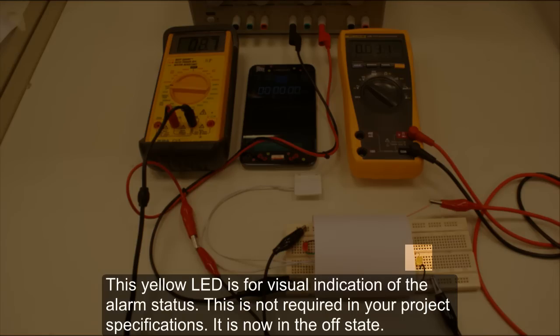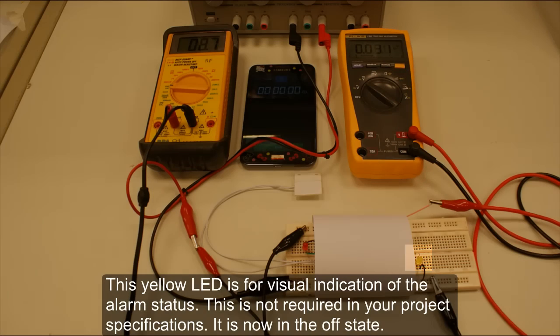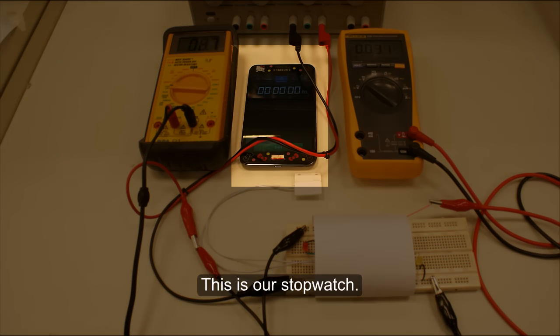This yellow LED is for visual indication of the alarm status. This is not required in your project specifications. It is now in the off state. This is our stopwatch.